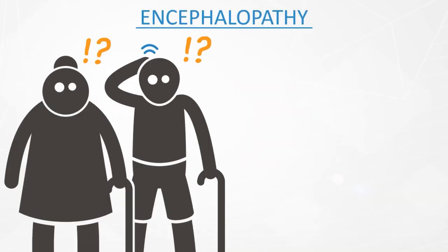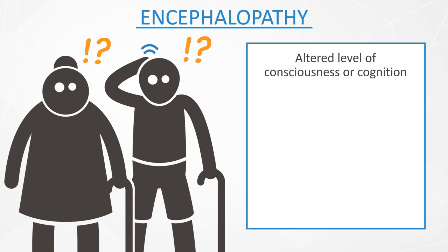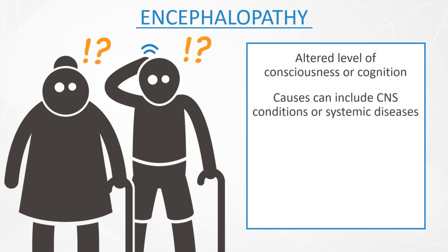Encephalopathy is a clinical syndrome characterized by altered level of consciousness or cognition. It can be caused by primary CNS conditions, or it can be secondary to systemic disease. To determine the etiology of acute encephalopathy, it is useful to consider the time course of symptoms: hyperacute, acute, or subacute.